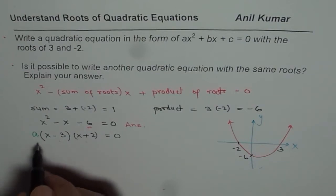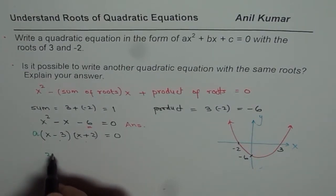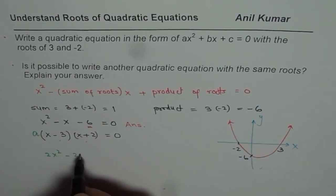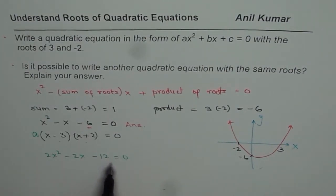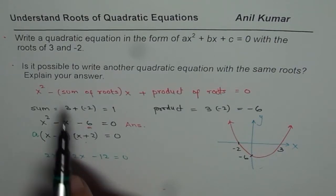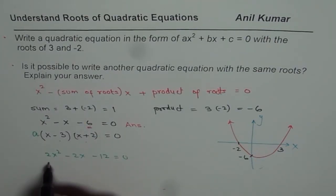So I could write this equation as, alternately, as 2x² - 2x - 12 = 0. This equation will also have roots at 3 and -2. I could factor this as,